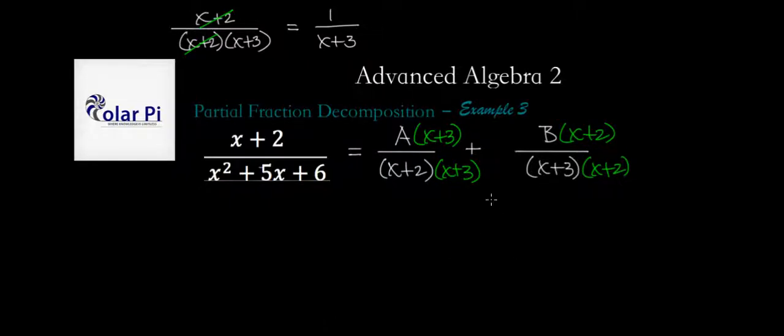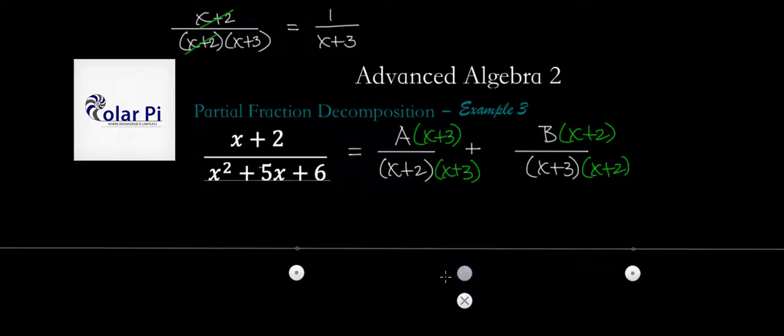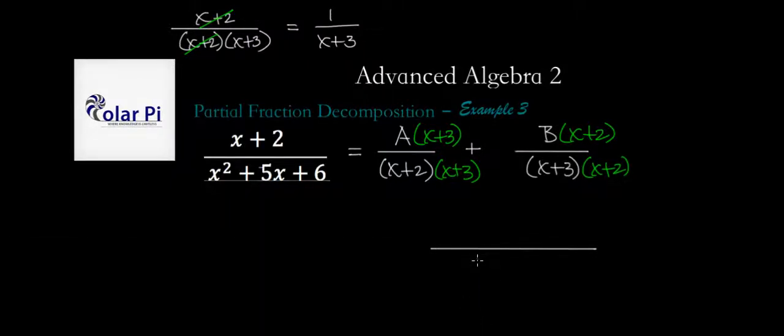Now, since this here is the same as this here, which in turn is the same as this here, we're good on the denominators. The denominators are all the same. So let's write a common denominator then: x squared plus 5x plus 6. So the denominator here is the same as the denominator of these guys.